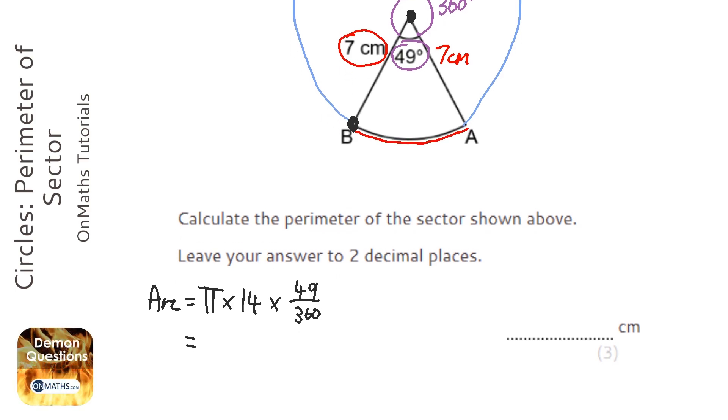So I'm going to type that into my calculator. Pi times 14 times, and I'm going to press the fraction button, 49 over 360. And it gives me the answer of 5.9864, and so on. I'm going to keep that in my calculator because I haven't answered the question yet.